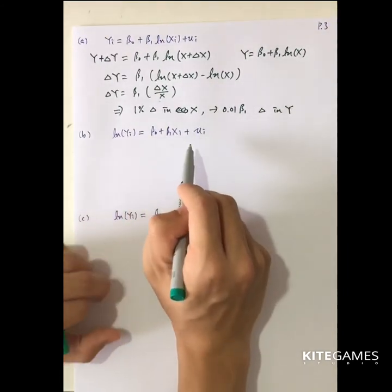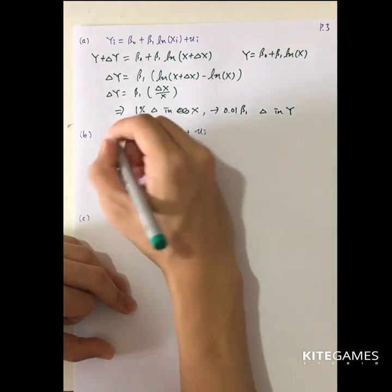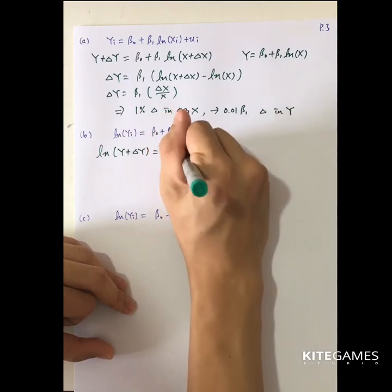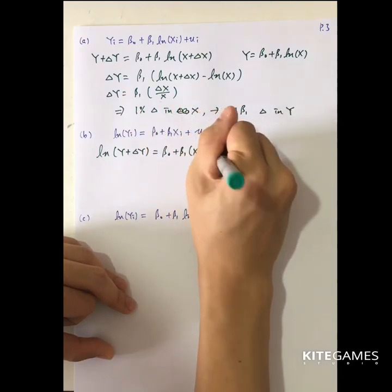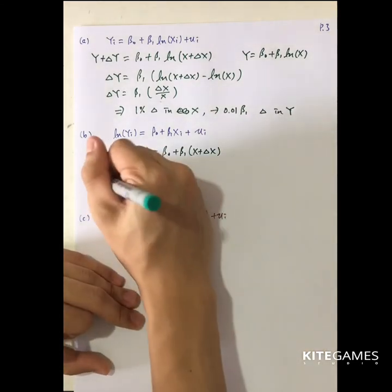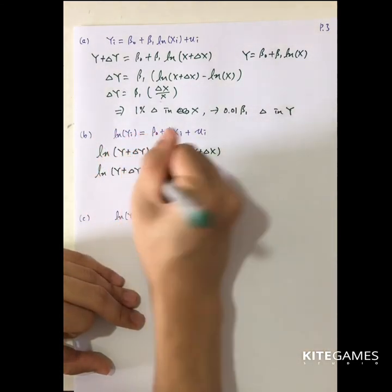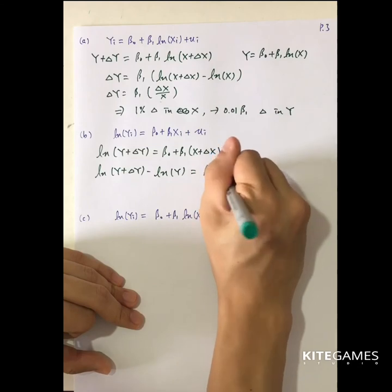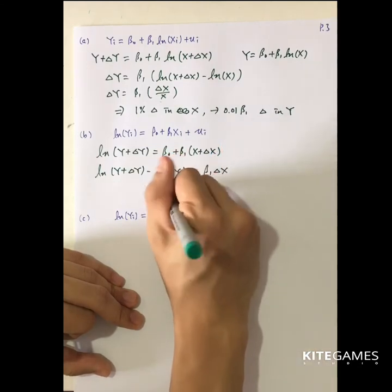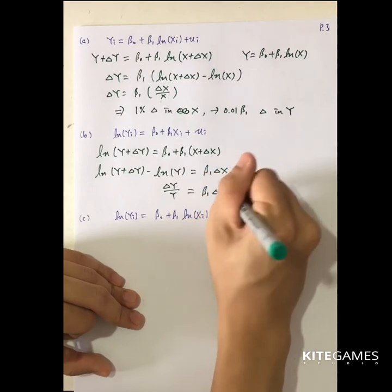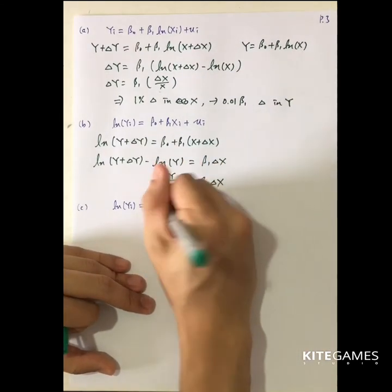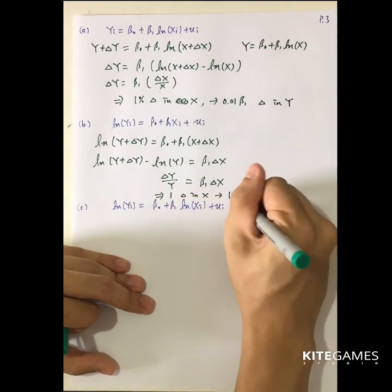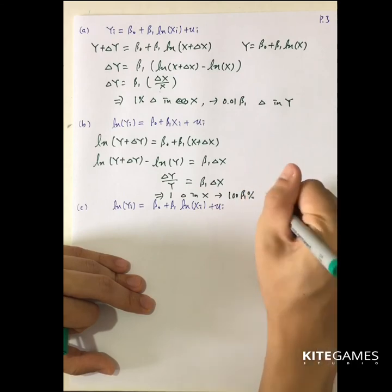Next is the log-linear model. To find the meaning of beta 1, you do the same thing — find the change in y with respect to change in x. After subtraction of the new equation from the old, what remains gives you: percentage change in y equals beta 1 times delta x. This means a one-unit change in x leads to 100 times beta 1 percent change in y.